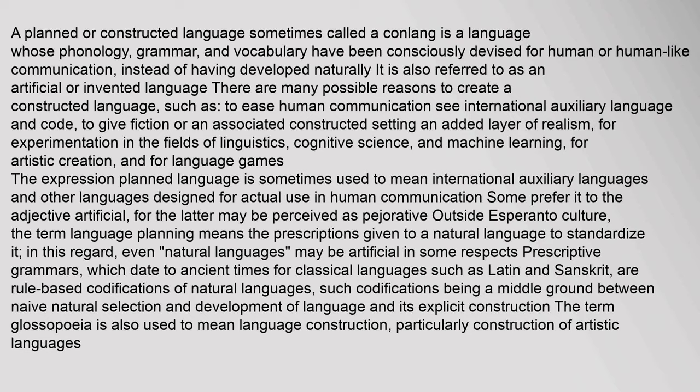A planned or constructed language, sometimes called a conlang, is a language whose phonology, grammar, and vocabulary have been consciously devised for human or human-like communication, instead of having developed naturally. It is also referred to as an artificial or invented language. There are many possible reasons to create a constructed language, such as to ease human communication, to give fiction an added layer of realism, and for experimentation in linguistics, cognitive science, and machine learning, or for artistic creation.